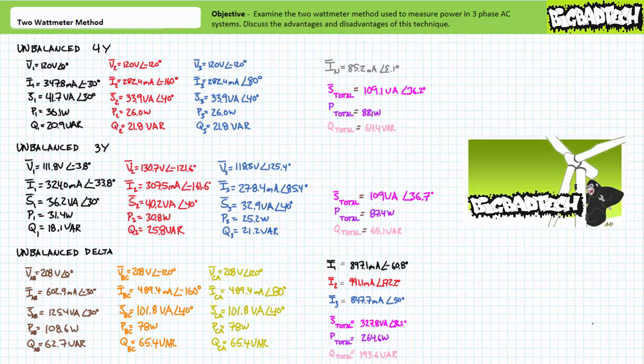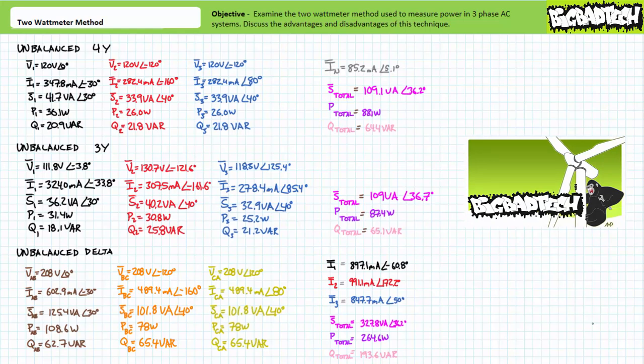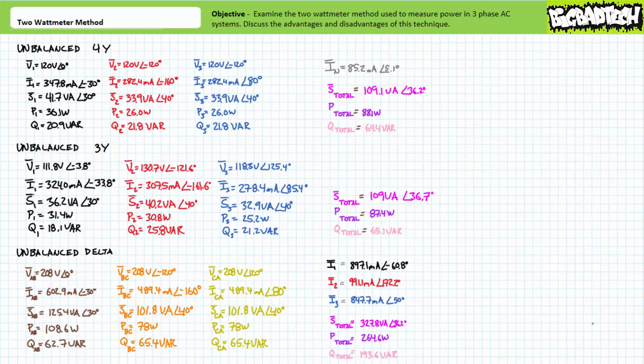During one of the aforementioned lectures, we explored the use of the single-watt meter method to measure power in balanced three-phase AC systems. The single-watt meter method is not applicable for unbalanced three-phase AC systems. Today we'll explore power measurement in unbalanced three-phase AC systems using the two-watt meter method. As such, we'll zoom in on the data for each of the unbalanced configurations.